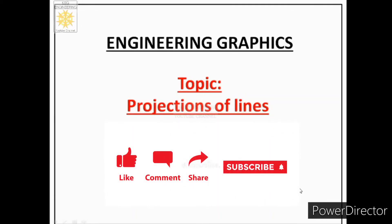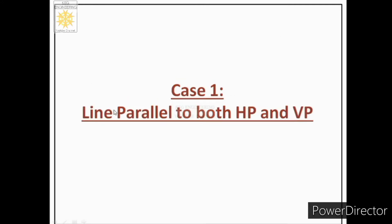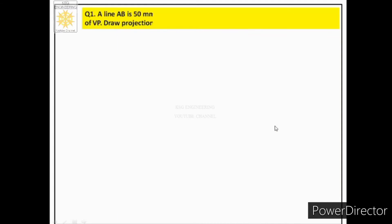Welcome to another lecture on engineering graphics. Today we will learn about projections of lines. Case one is related to a line parallel to both the horizontal and vertical plane. The first statement says: a line AB is 50 mm long, and points A and B are 40 mm above HP and 30 mm in front of VP.